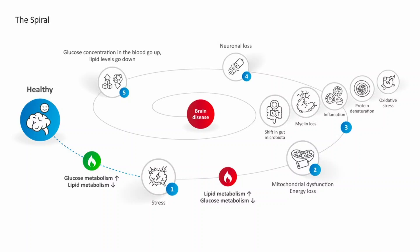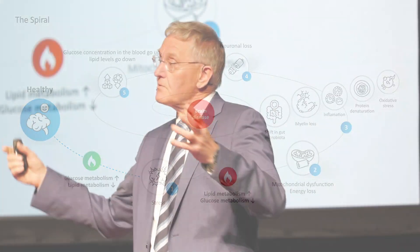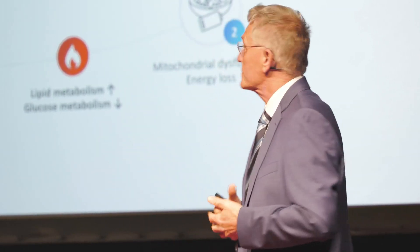The next problem is that under a stress situation with high lipid metabolism, your brain starts producing molecules like prostaglandins. Prostaglandins attract the entire immune system to your brain and activate it. Now you get inflammation in your brain — so you have both inflammation and oxidative stress.